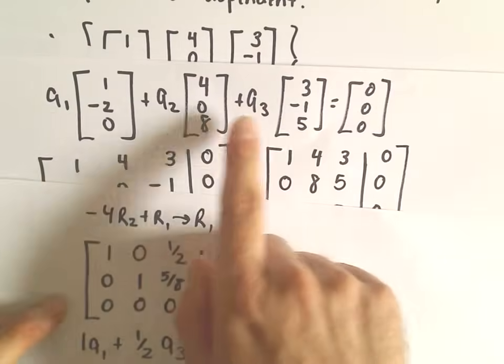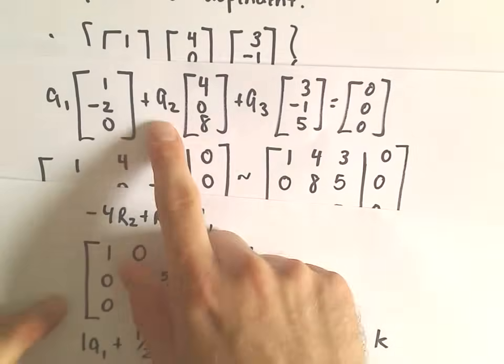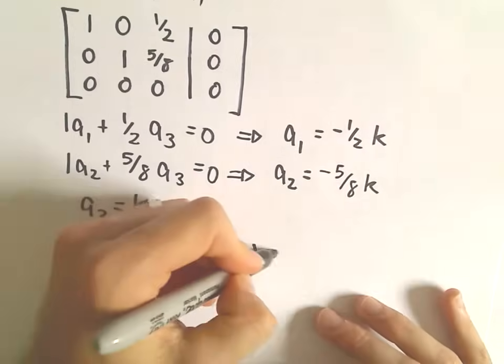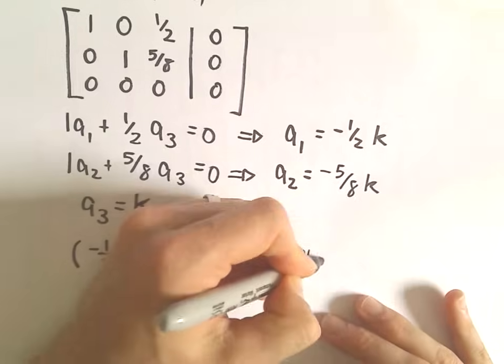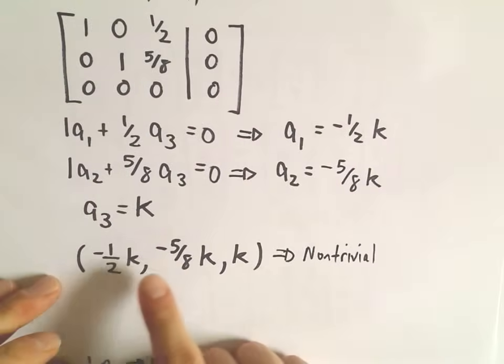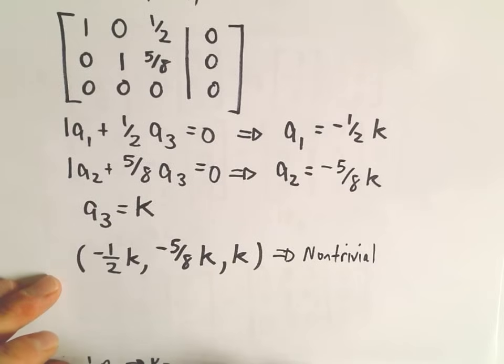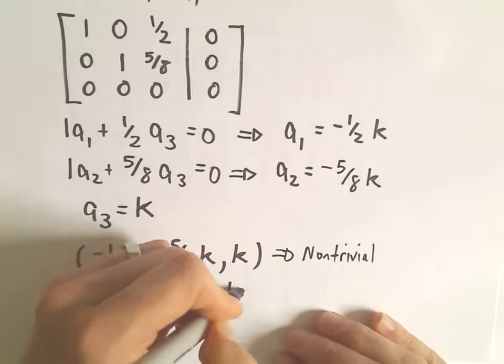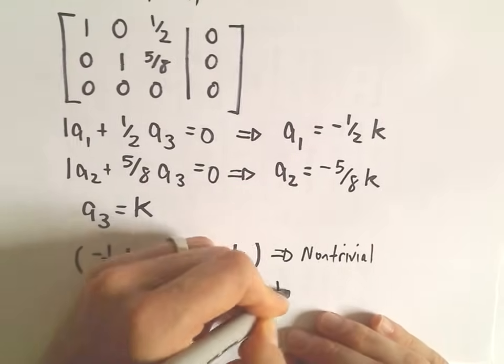Okay, so we can figure out different values for a1, a2, a3 by simply picking different values for k. So this tells us we have non-trivial solutions, which basically means the a sub 1, a sub 2, and a sub 3 value don't have to all equal 0. And that tells us that our set is actually linearly dependent.